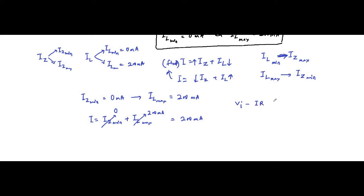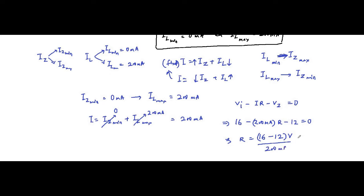Applying KVL: VI minus I·R minus VZ equals 0. VI is given as 16 volts, I is 200 milliamperes, and VZ is 12 volts. So: 16 minus (0.2 × R) minus 12 equals 0. This gives R = (16 − 12) / 0.2 = 4 / 0.2, which equals 20 ohms. Therefore R = 20 ohms.